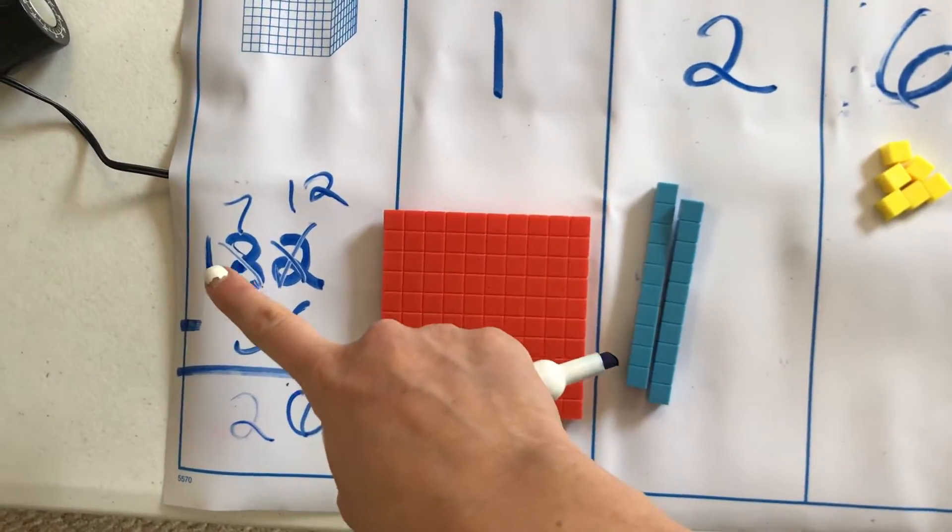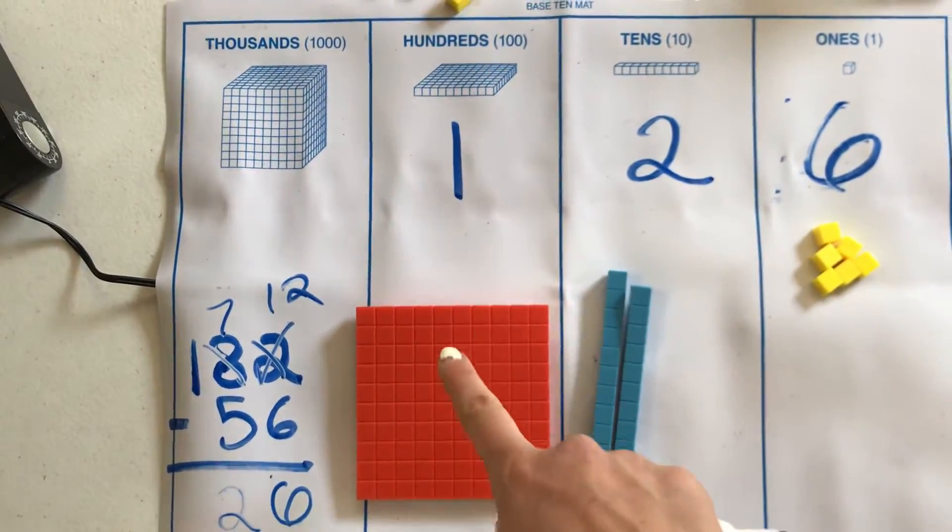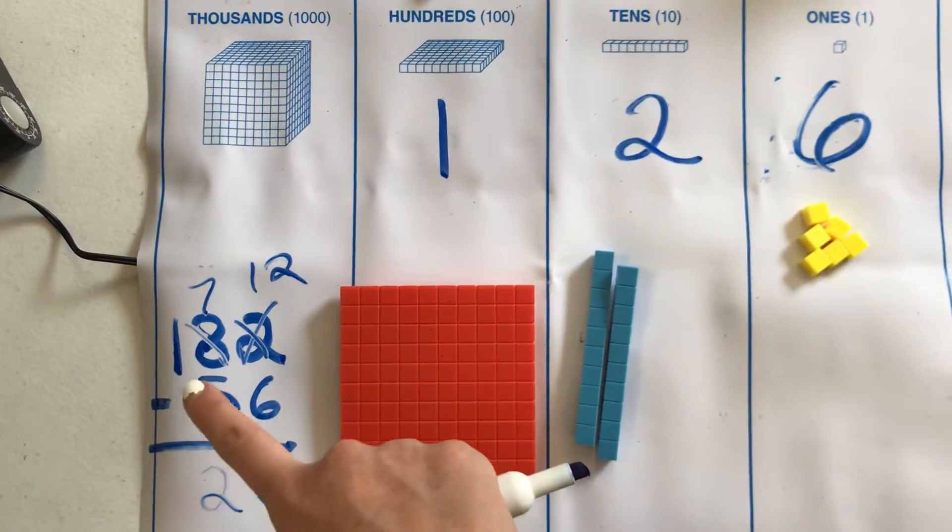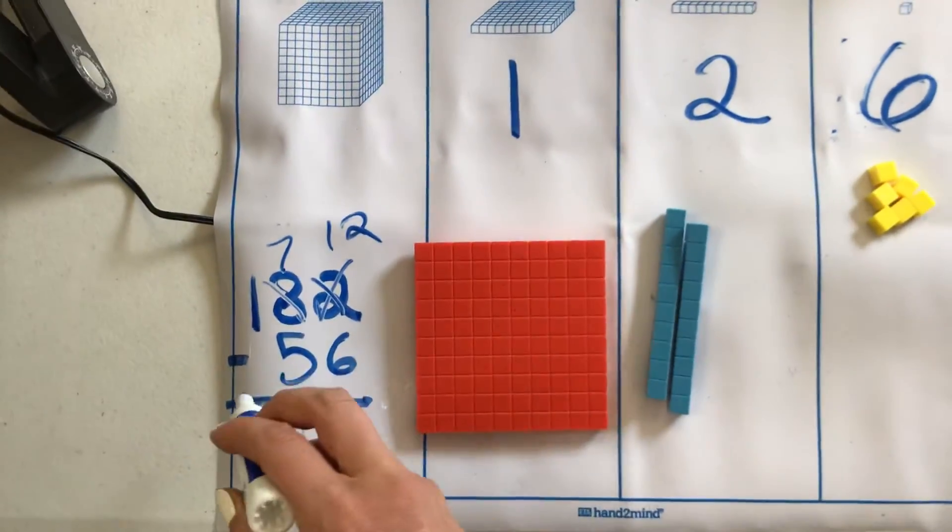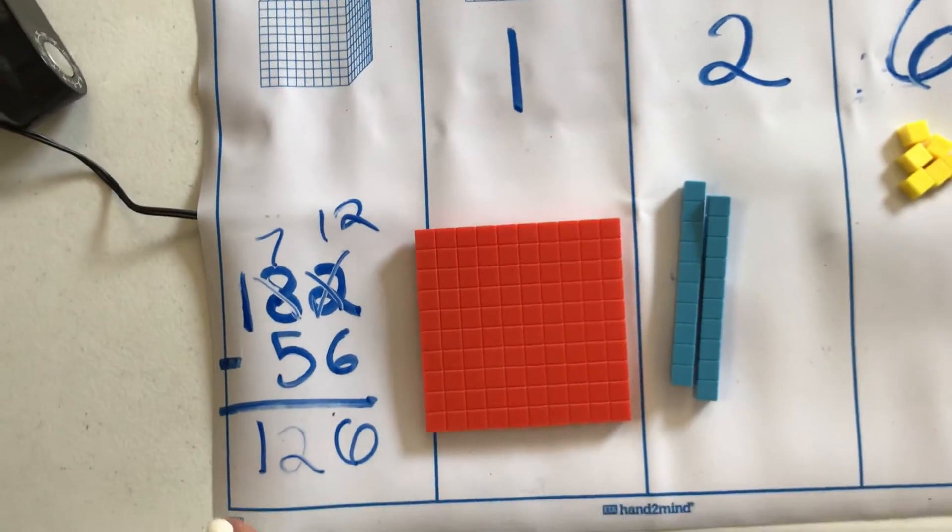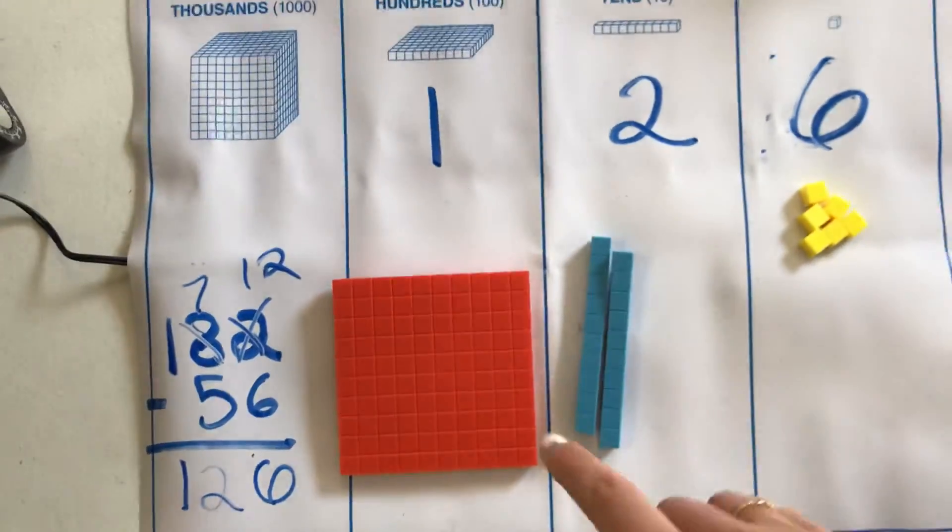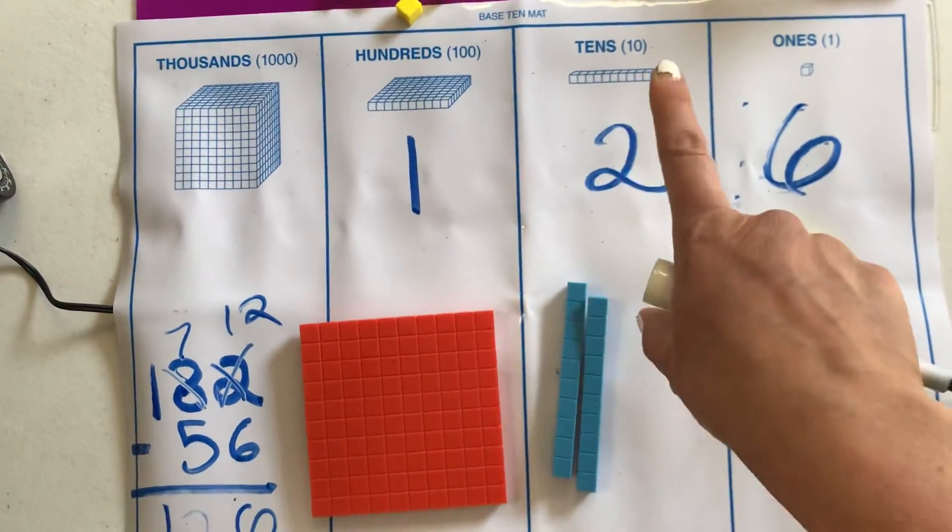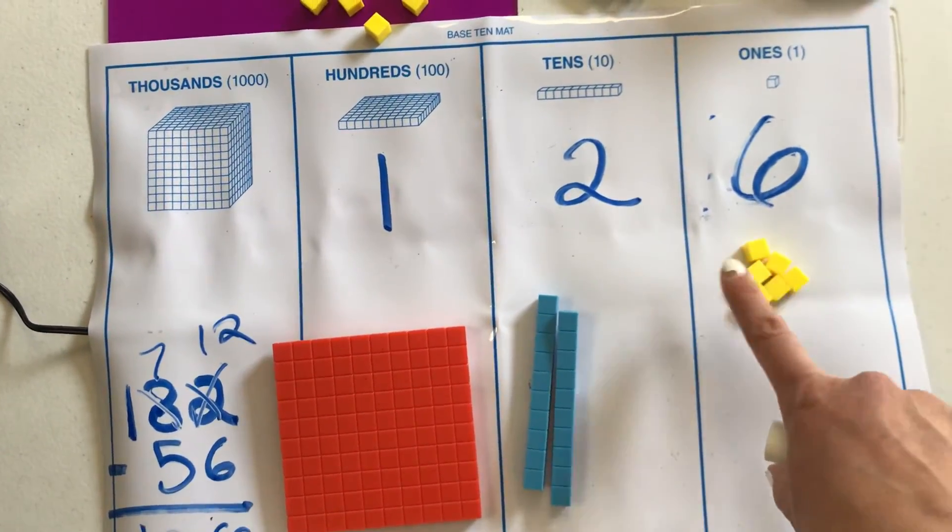And then I have 100. And I'm taking away nothing. So my hundred stays. So my answer is 126. Let's see if that matches up. 100, two tens, six ones.